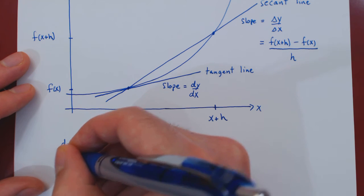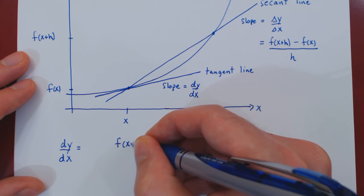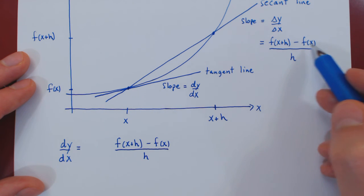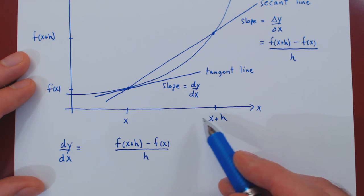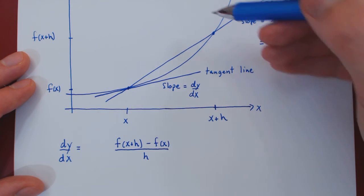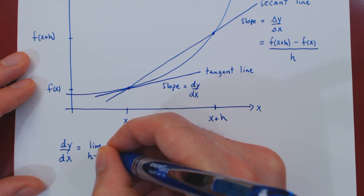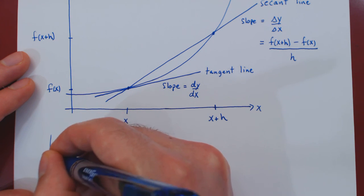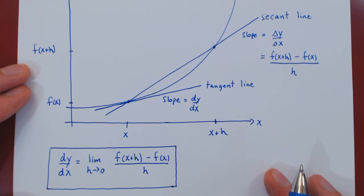So to find the derivative of the curve at x, we take the slope of the secant line — f of x plus h minus f of x, all over h — which is the change in y over the change in x. By letting h approach 0, x plus h approaches x, pushing the secant line onto the tangent line. So this slope, as h approaches 0, gives us the exact slope of the tangent line, and this is how we find the derivative of any function.